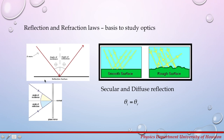Reflection is the abrupt change in the direction of the propagation of a wave that strikes the boundary between two different media. At least some part of the incoming wave remains in the same medium. Assume the incoming light ray makes an angle θi with the normal of a plane tangent to the boundary, and the reflected ray makes an angle θr with this normal and remains in the same plane as the incident ray and the normal.